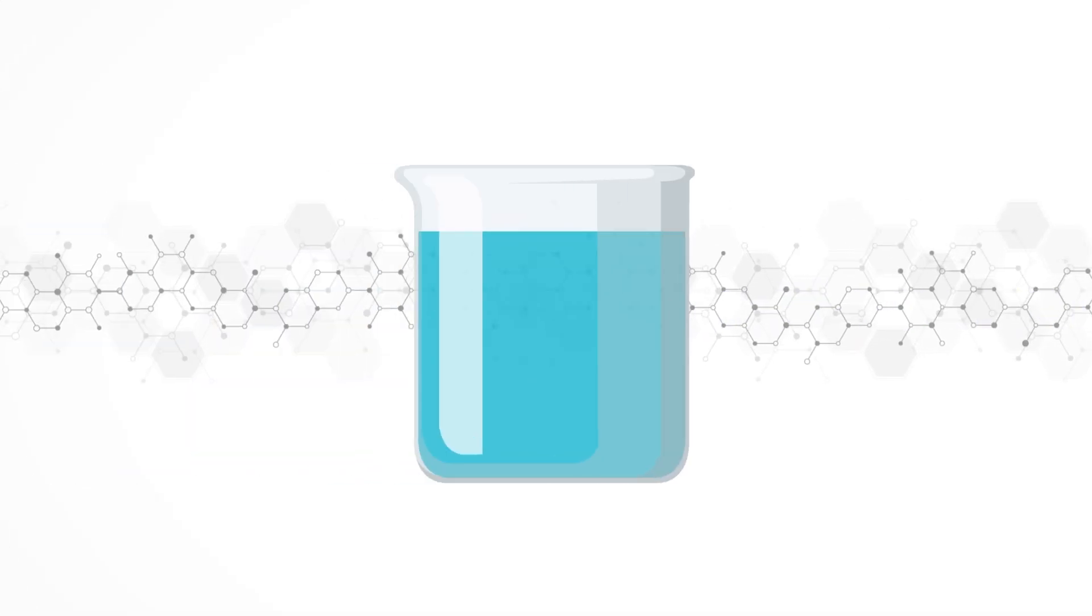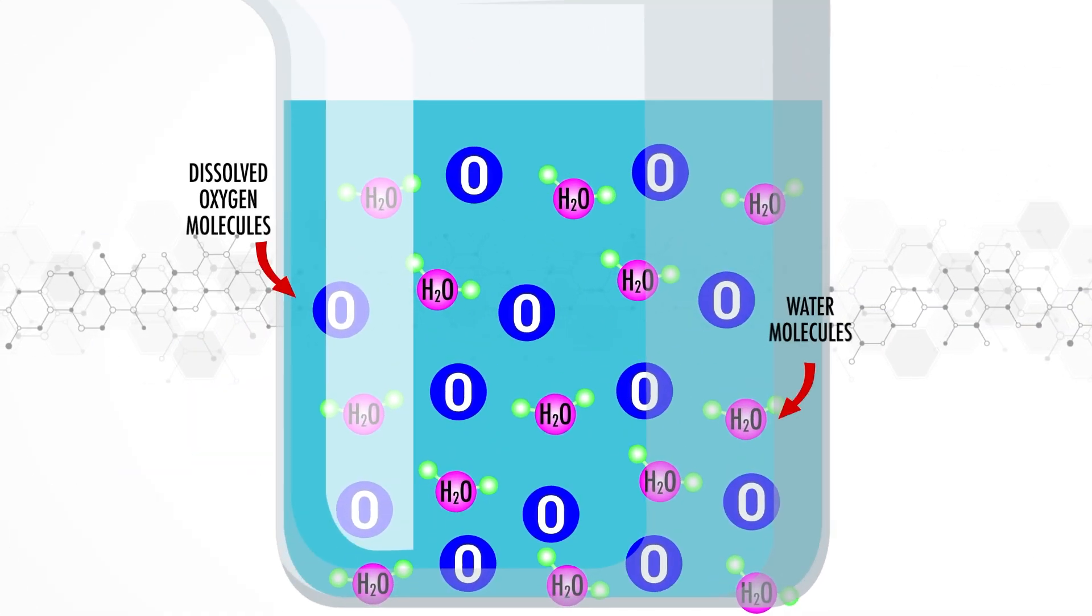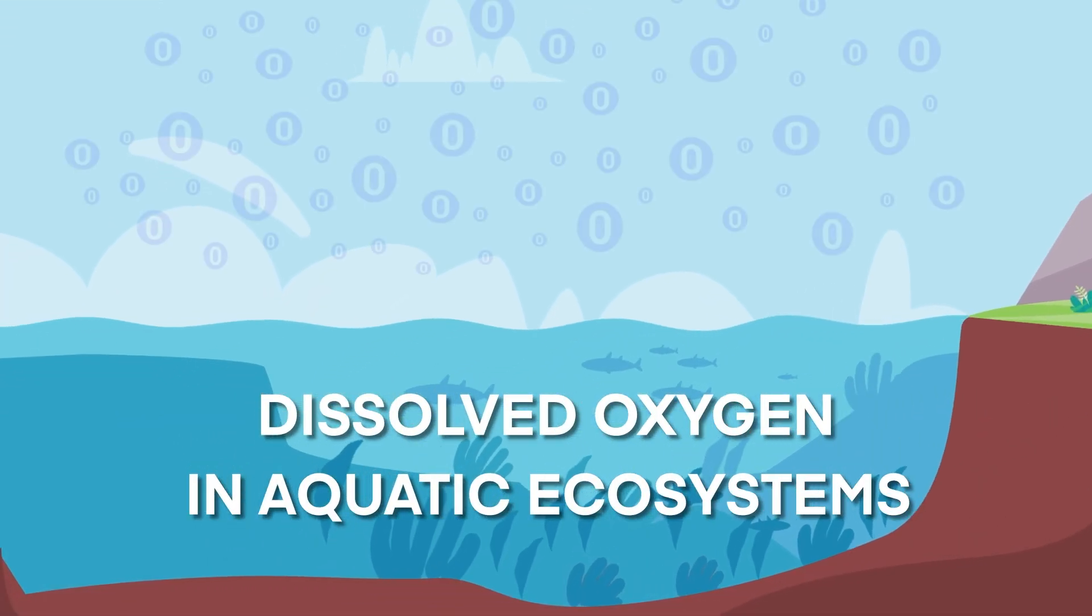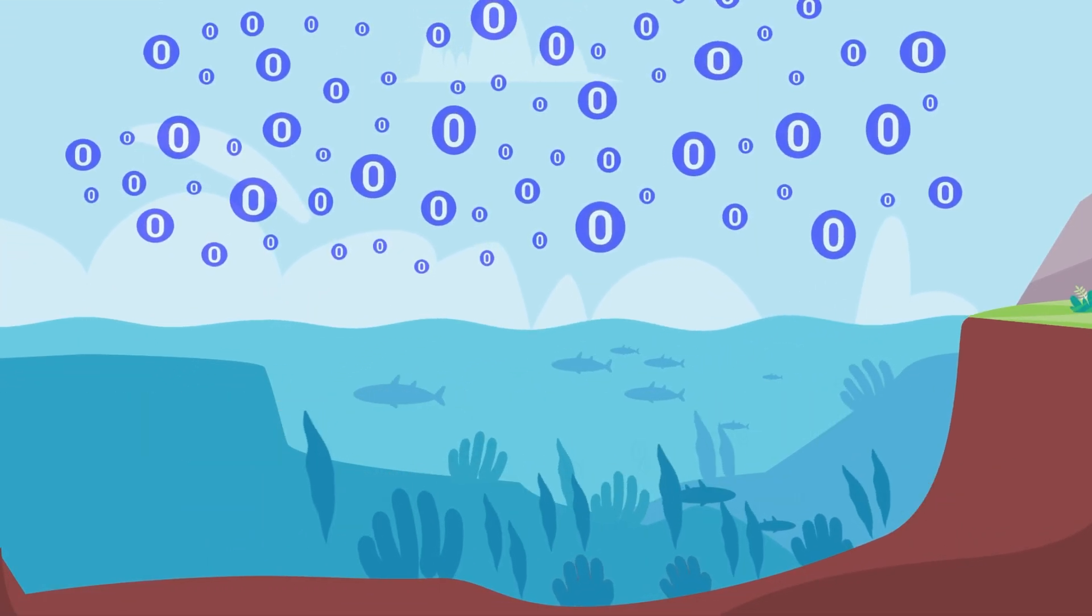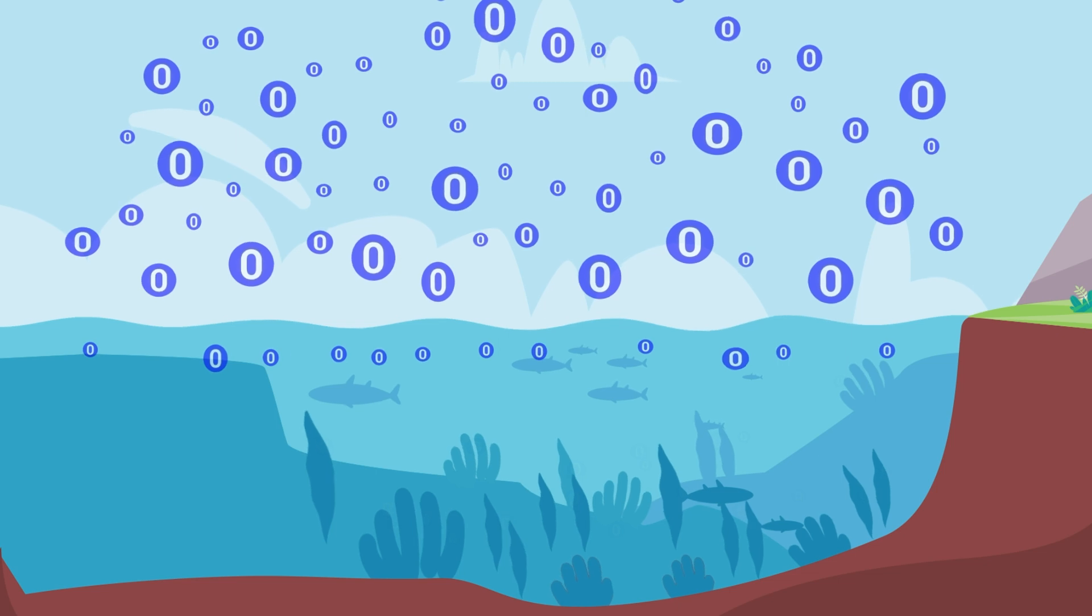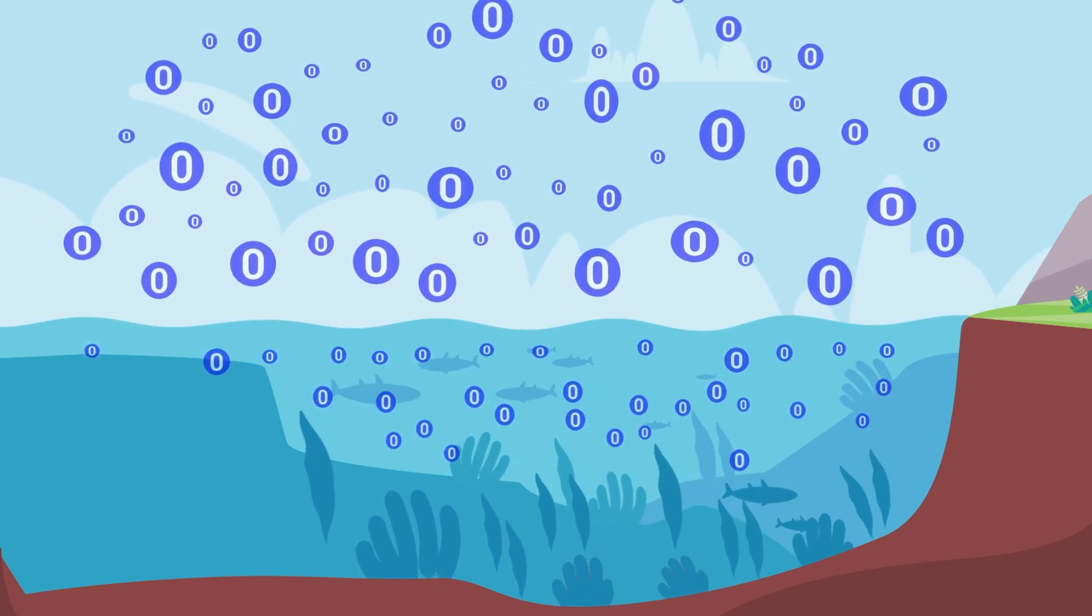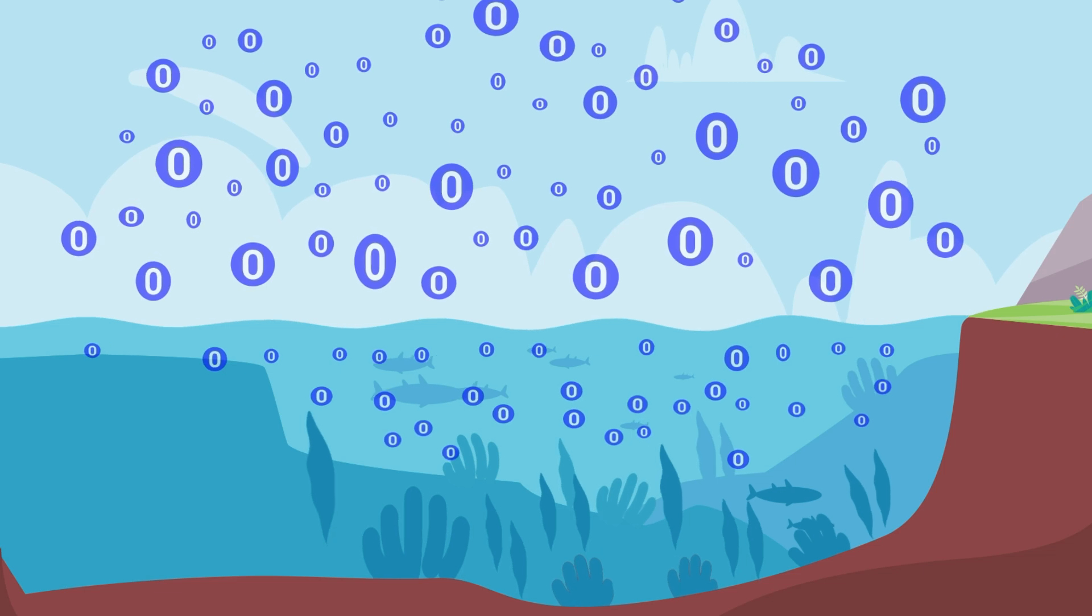Dissolved oxygen refers to the amount of oxygen dissolved in a unit volume of water. Unlike the oxygen we breathe, which is found in the atmosphere, dissolved oxygen is absorbed from the air or produced by aquatic plants and other organisms which, through photosynthesis, produce oxygen that is dissolved in water.